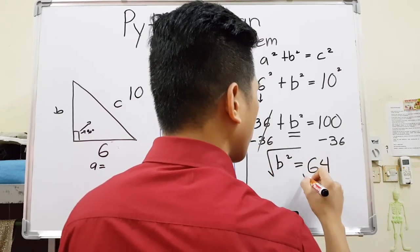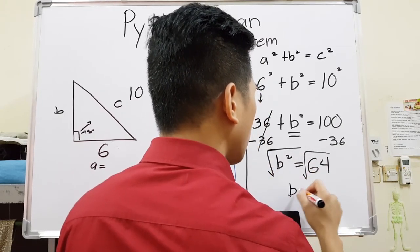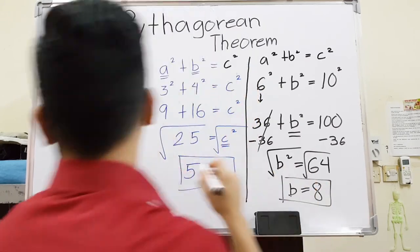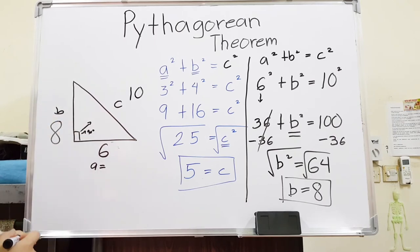And then square root both sides. Therefore, B equals 8. And we have B now. And that's how you do Pythagorean theorem.